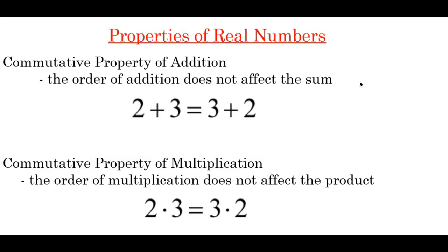the commutative property of addition states that the order of addition does not affect the sum. So 2 plus 3 is equivalent to 3 plus 2. The commutative property of multiplication states the order of multiplication does not affect the product. So 2 times 3 equals 3 times 2. So the commutative property is all about order — the order of addition, the order of multiplication does not matter.